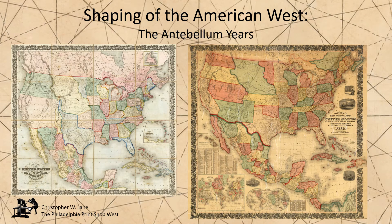At the beginning of the 18th century, what is today the Trans-Mississippi United States consisted of three political regions, each controlled by a foreign power. By early in the 20th century, those areas were part of the United States and were broken into 22 political divisions, with borders being essentially as they are today. The changes that occurred over that time are fascinating and are the subject of our Shaping the American West series of YouTube lectures.